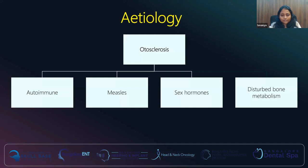Coming to the etiology, there are four main categories: autoimmune, measles, sex hormones, and disordered bone metabolism. Looking at autoimmune disease, in certain studies patients have shown antibodies to type 2 collagen, or closely related antibodies to type 9 collagen. In certain animal studies, if these antigens were introduced, the animals were prone to develop otosclerosis. But it is not confirmatory and not present in all patients who present with otosclerosis.